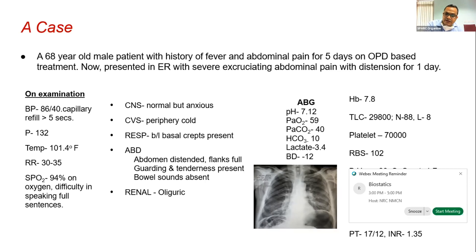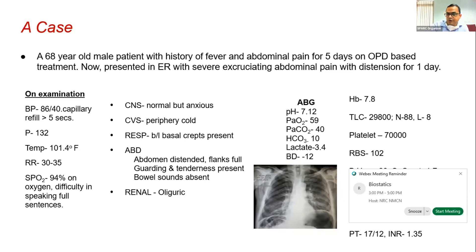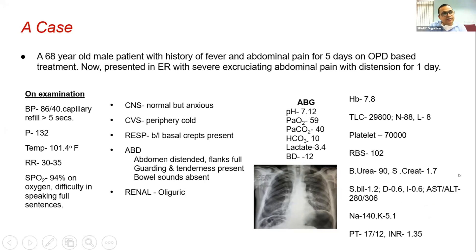Blood gas results: pH 7.12, PaO2 59, PaCO2 40, bicarb 10, lactate 3.4, base deficit −12. Laboratory reports: hemoglobin 7.8, leukocytosis 29,000 TLC with 88% polymorphs, low platelet count 70,000, blood sugar 102. Blood urea/nitrogen and LFT deranged; sodium 140 (normal); potassium 5.1 (high); INR mildly deranged at 1.35. Chest X-ray shows gas under the diaphragm, confirming bowel perforation.